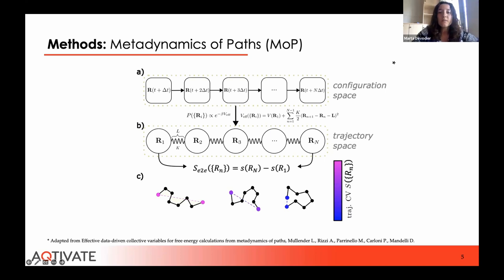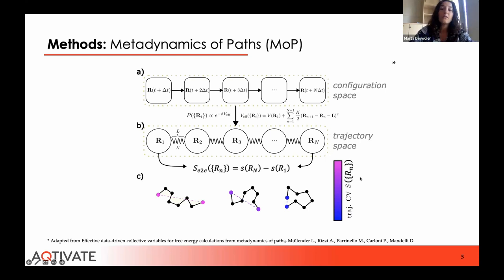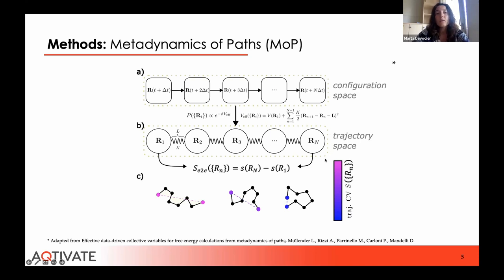The polymer is constituted by the system configurations along the path connected by springs. One can generate a full trajectory at once by sampling directly from the path probability distribution using MD simulation of the fictitious polymer. This means dealing with a system that is now N times larger than the original one. However, the calculation can be made fully parallel. When coupled with well-established enhanced sampling schemes, the method allows fast exploration of phase space and also retrieves dynamical information. Metadynamics of path is a CV-based approach.